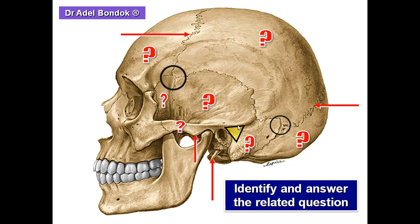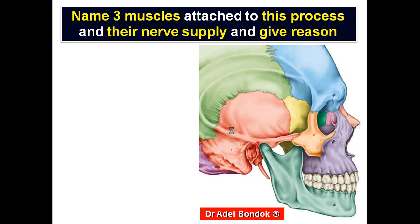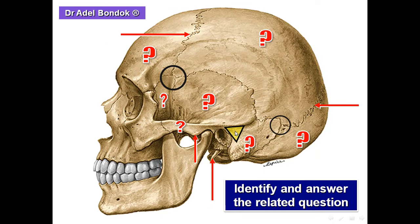This triangular area above the external auditory meatus is the suprameatal triangle. Its clinical importance is that this triangle overlies the mastoid antrum — the tympanic antrum — which is very important clinically.